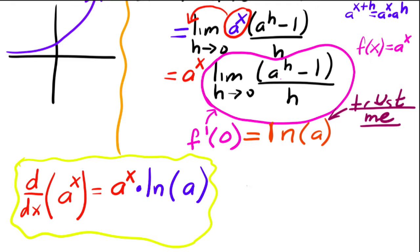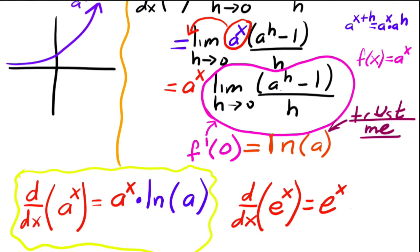Okay. So that's the first one. But then also notice that the derivative of e to the x. So remember e, the special number, 2.71 blah blah blah, is equal to itself, just like this guy. But then what's natural log of e? Well, that's just equal to one. And so this function, the natural exponential, its derivative is equal to itself. And I mean that is astonishing. That's crazy.